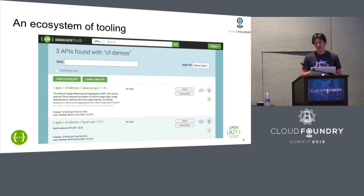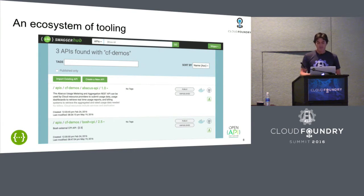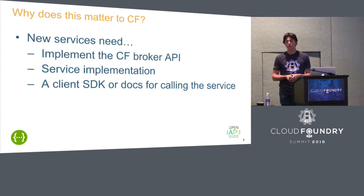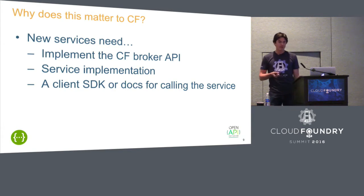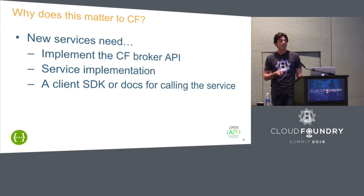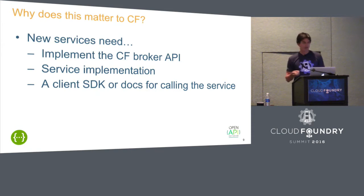And there's a great ecosystem of tooling. This is a screenshot of a project that I work on called Swagger Hub. It helps give you the ability to centralize these definitions and then bring them into your application lifecycle. So why does this matter to this project, Cloud Foundry? Let's say that you are in the business of creating a new service. In order to produce a new service, to consume and fit in the ecosystem that you're all working within, you need to implement the broker API so that something can connect and get a proxy or information to connect to your service.